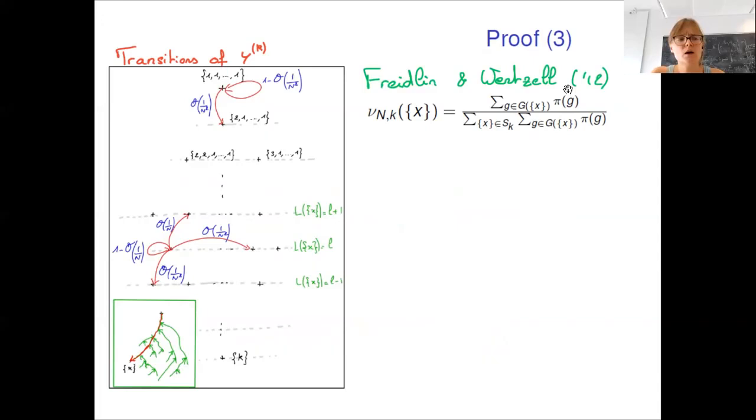To this aim, we use the characterization of the stationary distribution by Freilin and Wenzel in random perturbations of dynamical systems. This characterization gives that the limiting probability that a Markov chain is in some state is proportional to the sum over all spanning trees that point towards that state of the probability of these oriented trees.